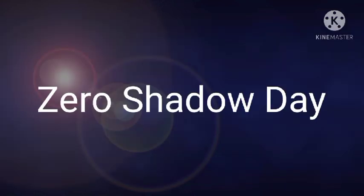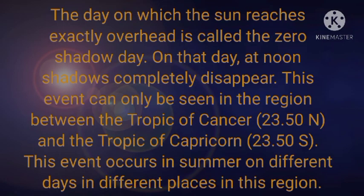The next topic is the zero shadow day. As the name indicates, the shadow is zero — but the actual meaning is that the shadow is directly under our feet. The day on which the sun reaches exactly overhead is called the zero shadow day; on that day the noon shadow completely disappears. This event can be seen in the region between the Tropic of Cancer (23.5° North) and the Tropic of Capricorn (23.5° South), and it occurs in summer on different days in different places in this region.